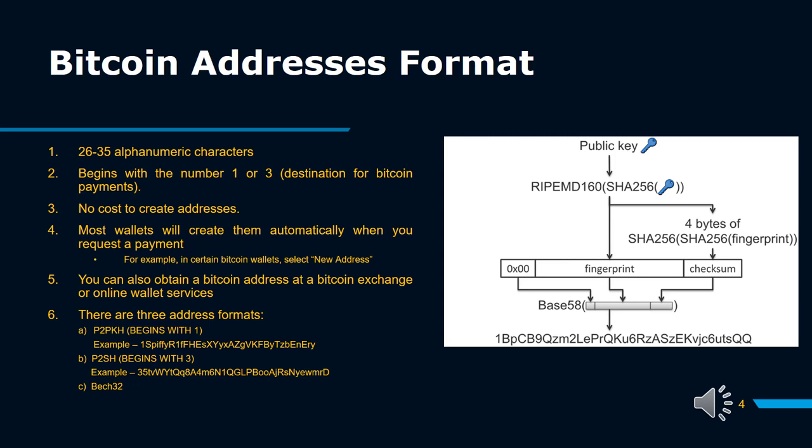So regardless of whether you own just Bitcoin, or Ethereum, or a host of several different cryptocurrencies, all you need to do is open your wallet to gain access to all the different addresses contained within it. There are different ways you can access your cryptocurrency wallet: on a desktop, on a browser, or by using a physical wallet. Otherwise known as cold storage, physical wallets are more secure because they're offline and less susceptible to hacks. You can also obtain a Bitcoin address at a Bitcoin exchange or online wallet services.